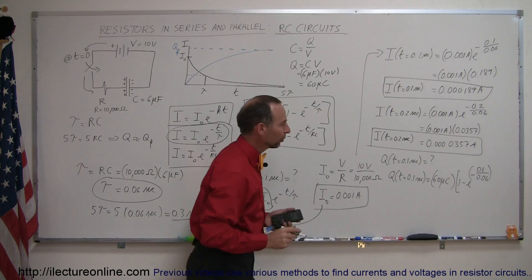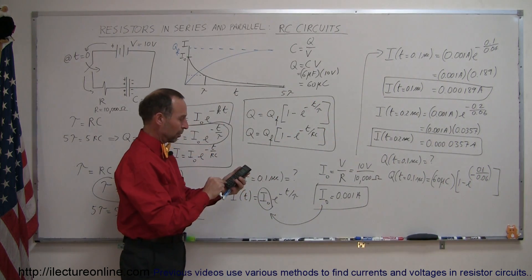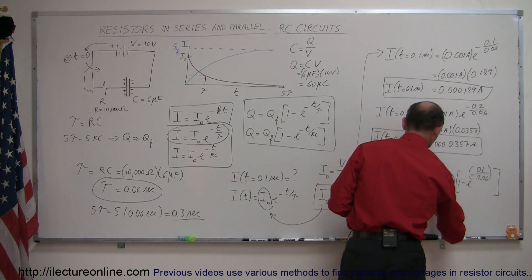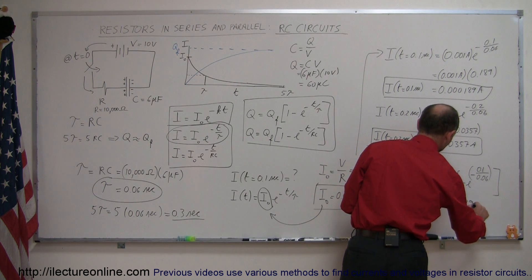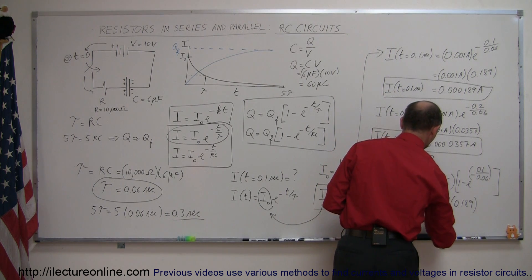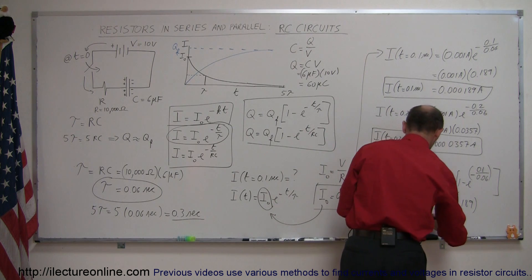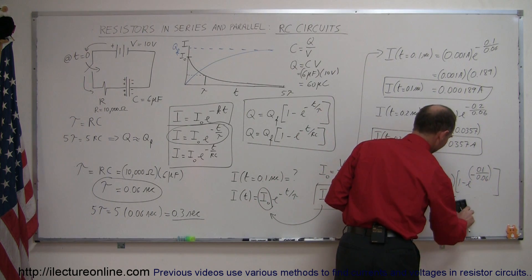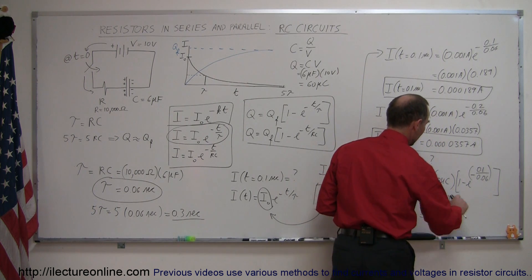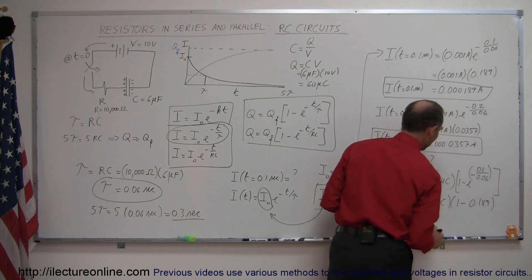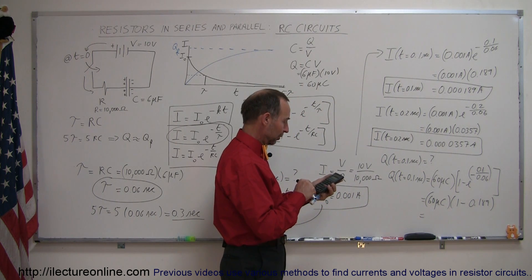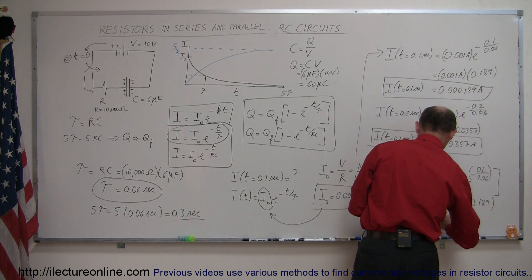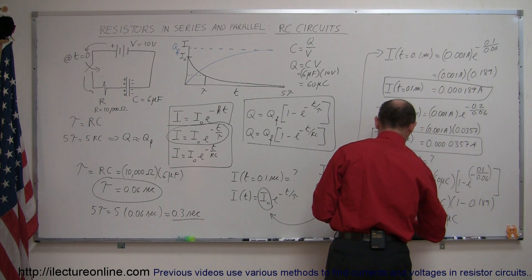So we can say the charge when t = 0.1 seconds equals 60 microcoulombs times (1 minus e to the minus 0.1 over 0.06). We compute e to the minus 0.1/0.06, which gives 0.189, then 1 minus 0.189 equals 0.811. Multiplying 0.811 times 60 microcoulombs gives 48.7 microcoulombs. That is the charge on the capacitor after 0.1 seconds.